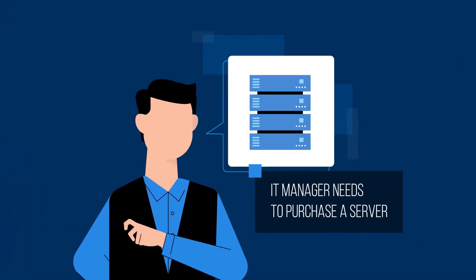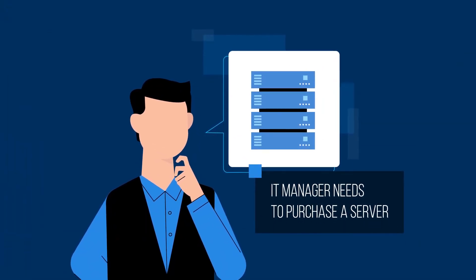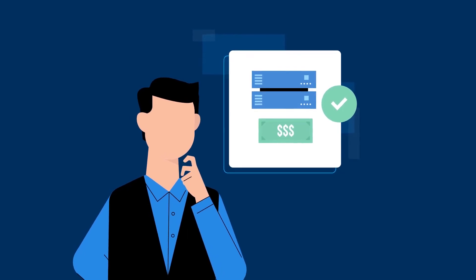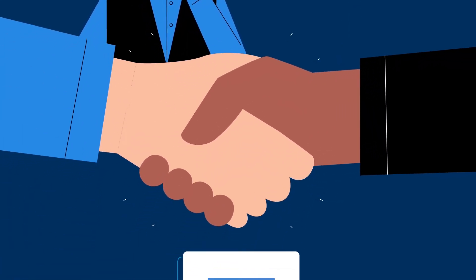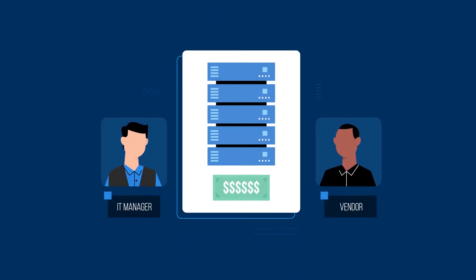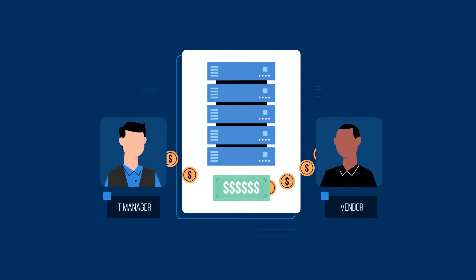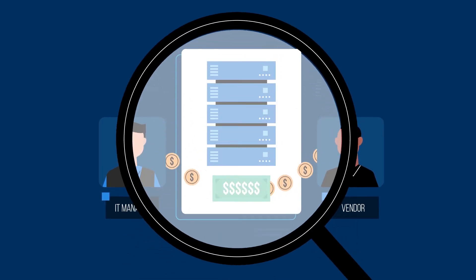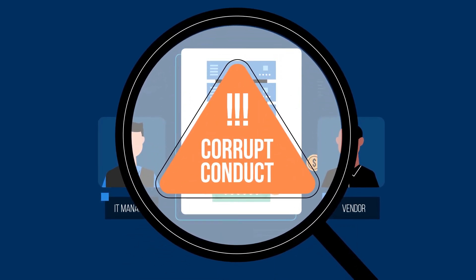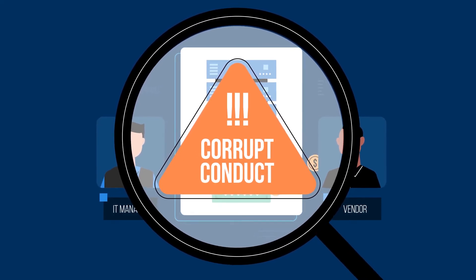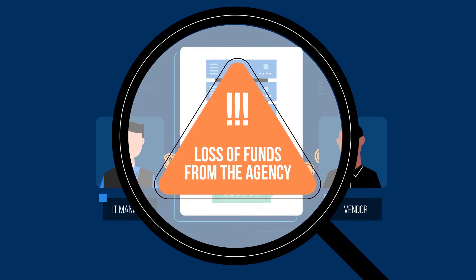Here's an example. A government IT manager needs to purchase a server and a small, inexpensive one will suffice. But the manager engages a hardware vendor and they agree to install a larger, more expensive server so the two of them can personally split the additional profit from the sale. In this case, there is clear evidence of corrupt conduct because it is deliberate, dishonest and partial conduct that results in a loss of funds from the agency.